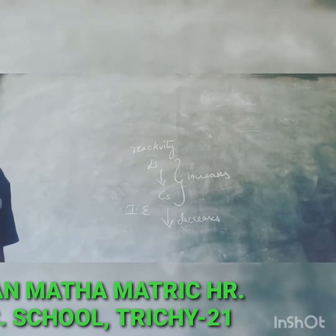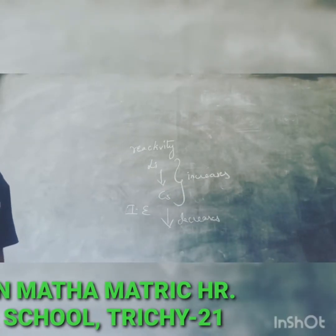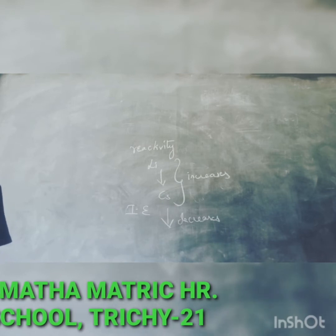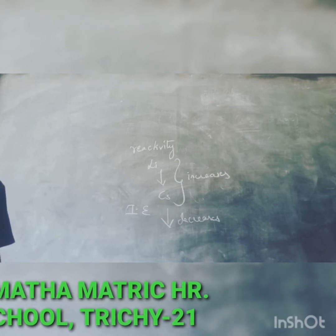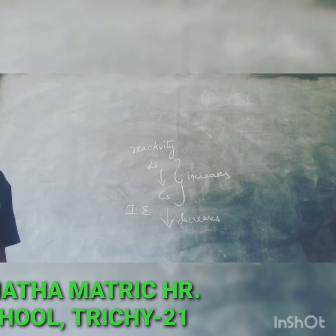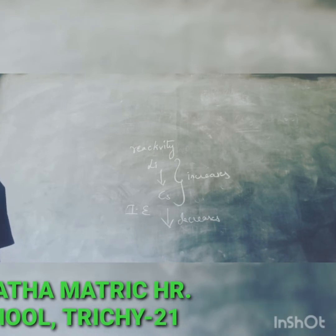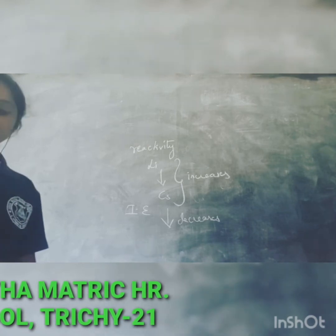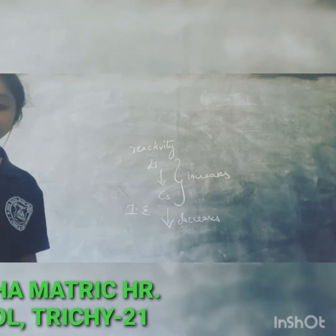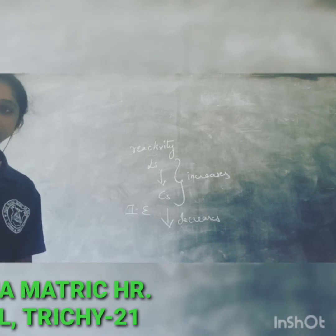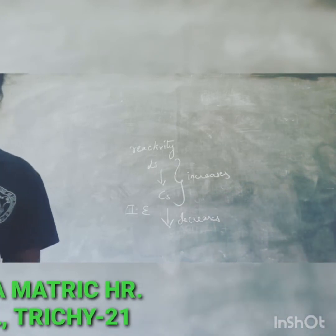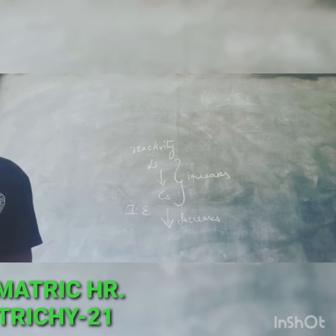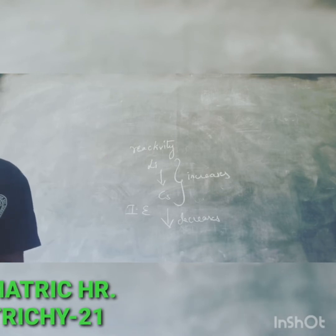All alkali metals are highly reactive towards more electronegative elements such as oxygen and halogens. Some characteristic chemical properties of alkali metals are: reaction with oxygen, reaction with hydrogen, reaction with halogen, reaction with liquid ammonia, reaction with water, reducing activity, and reaction with carbon.